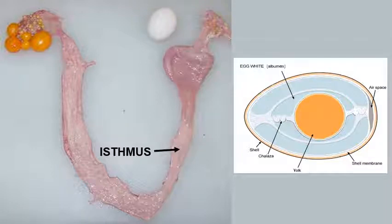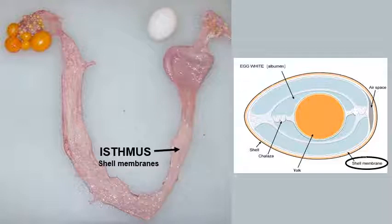The next part of the assembly line is the isthmus. This is where the shell membranes are added. There is an inner and outer shell membrane. The yolk remains here for about 75 minutes.